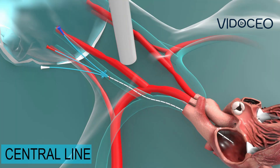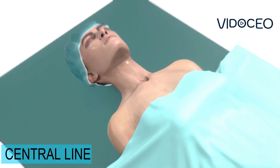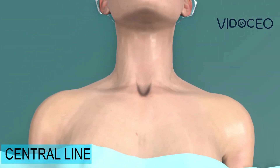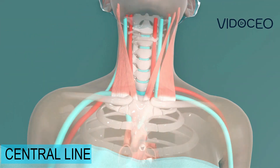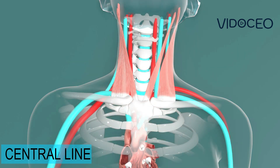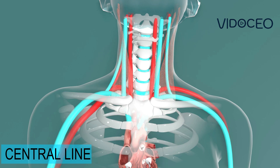A central venous catheter is placed to allow medications to be infused into the large veins inside of the chest. A common place to have the catheter enter the venous system is in the large vein of the neck called the jugular vein. The jugular vein is below some muscles and is near the artery of the neck.